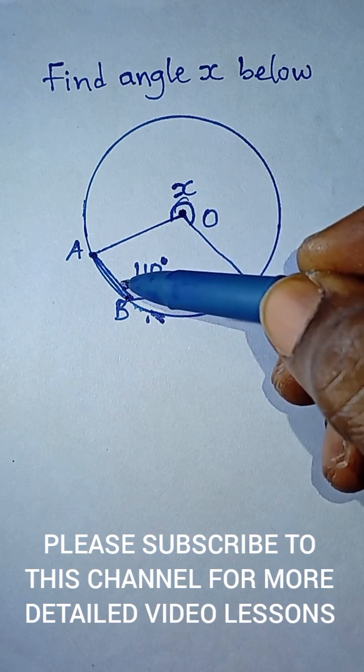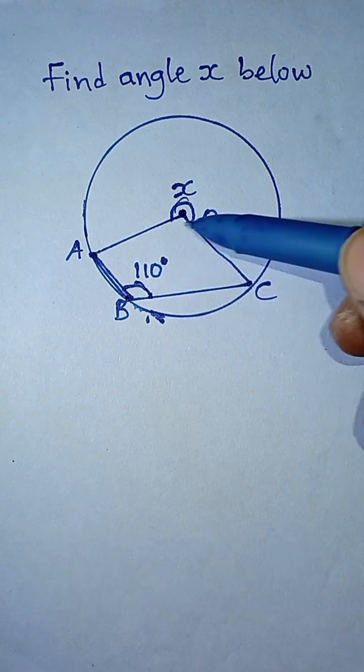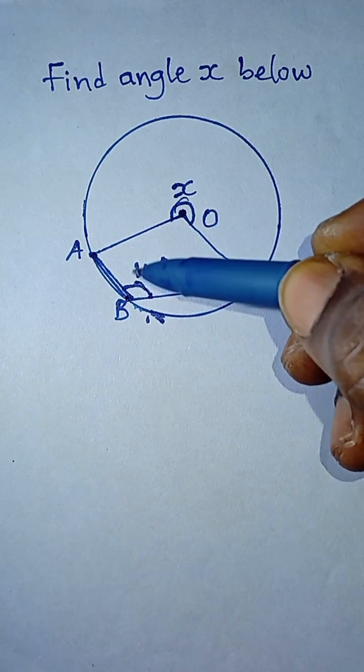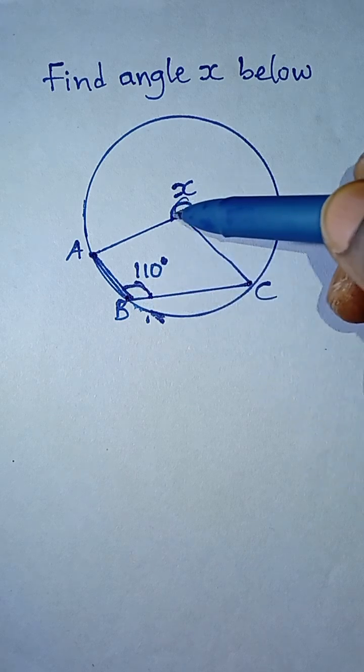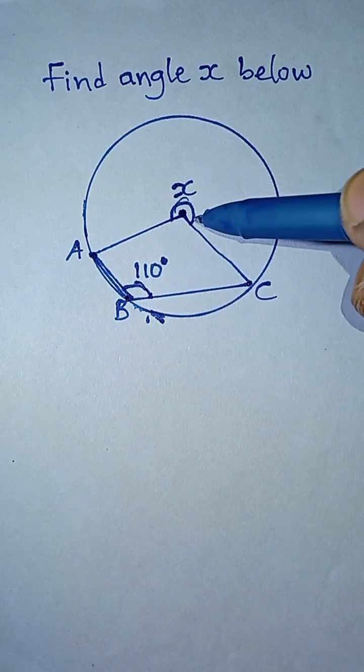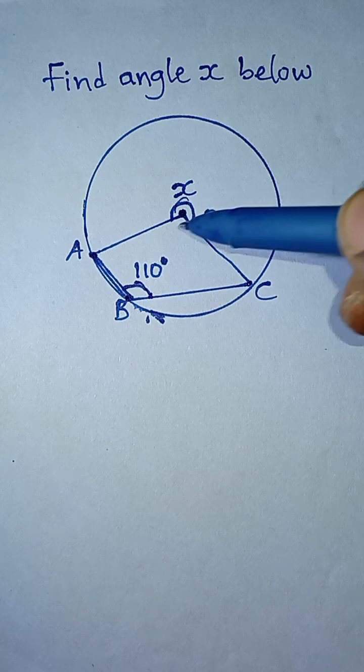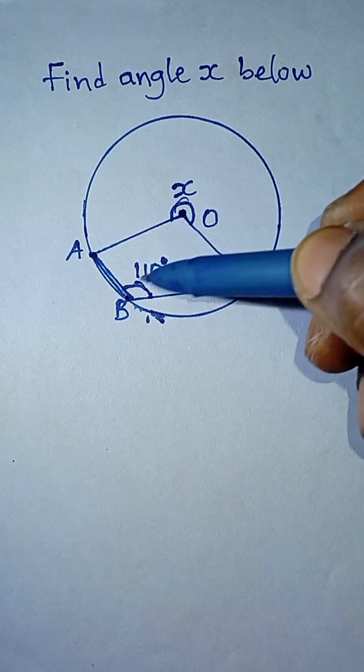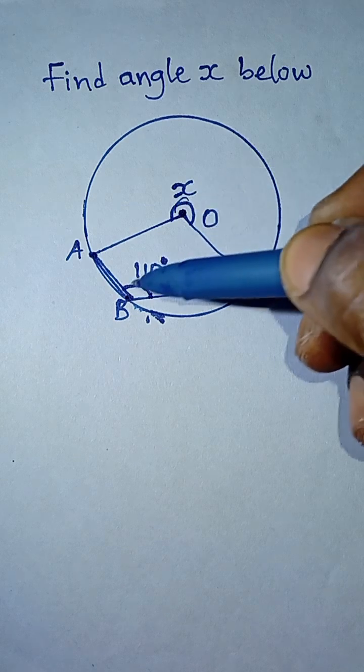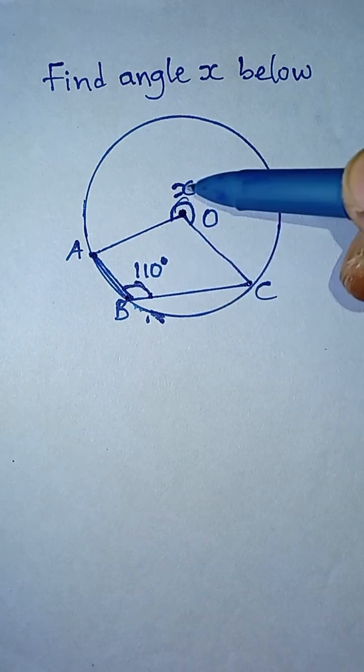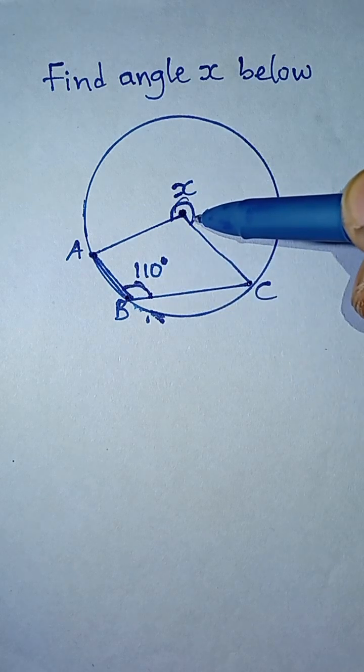So please don't make the mistake of taking the 110 multiplied by 2 and saying it is the angle at this side. No. It must be the angle at the other side, the corresponding side. So 110 multiplied by 2 will give us X.